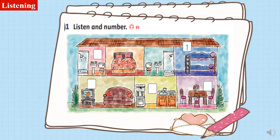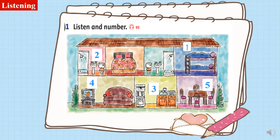Okay, you can listen more by yourself. I will have you check the answers. Number two: this is the bedroom. Number three: this is the kitchen. Number four: this is the living room. And number five: this is the dining room.